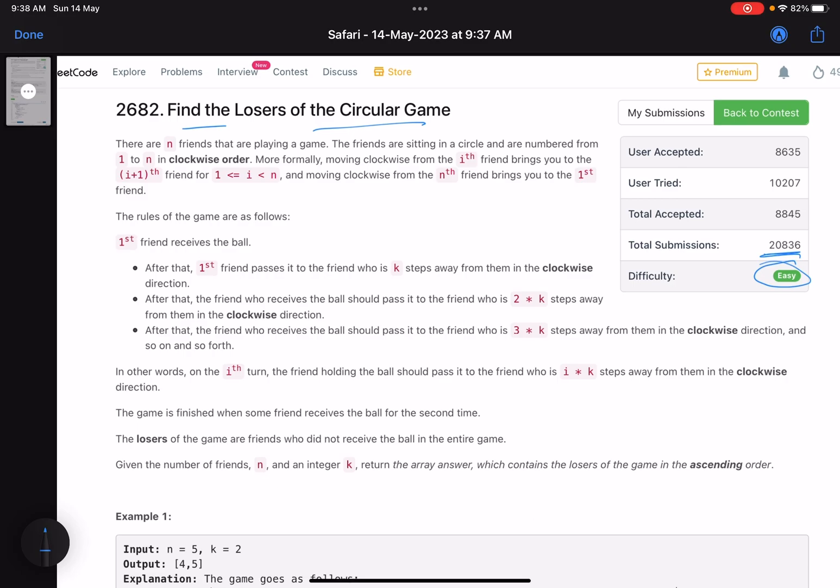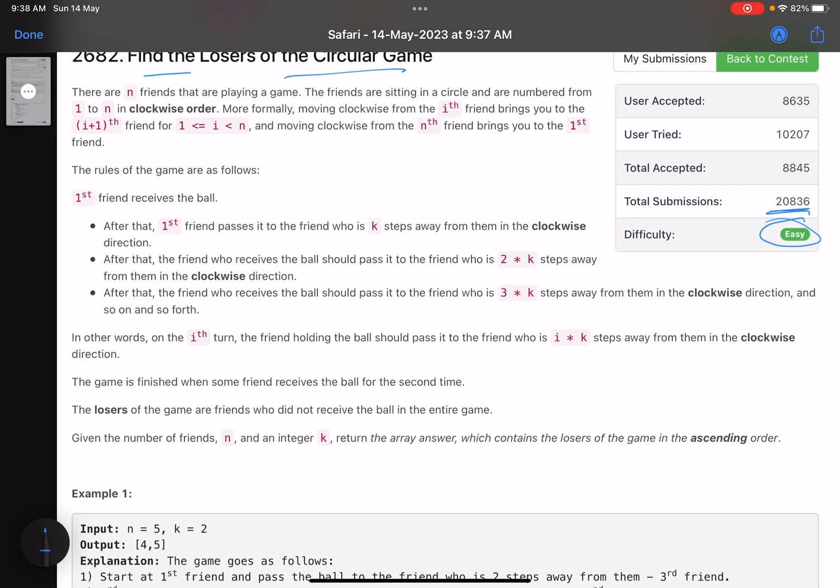It's a very easy problem statement. It says that you have some friends sitting in a circle. You start with the first friend, you have a ball. You start with round number one, and that friend passes the ball. You also have a variable k, and the friend passes the ball to a friend who is k steps away.